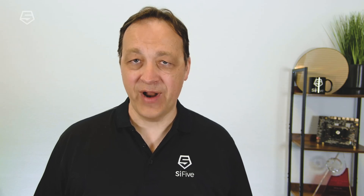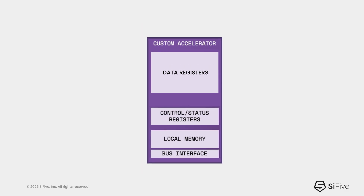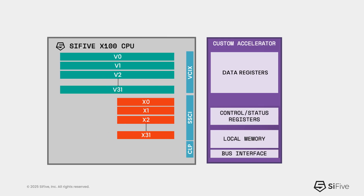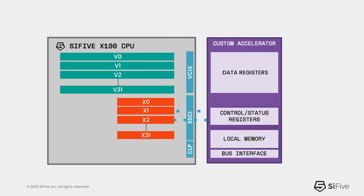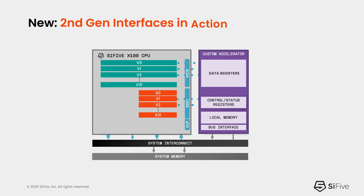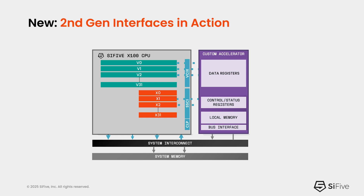Let's see how the second-generation coprocessor interfaces are used in practice. In an example where the customer attaches their own custom logic to the Sci-5 X100 series core, they use the SSCI interface to drive command and control registers in the coprocessor, and the VCIX interface to drive vector data to and from the accelerator. The vector unit on the X100 core can do a comprehensive set of vector loads and stores in and out of memory, send the packed data over to the customer coprocessor, and also perform pre- and post-processing of that data before it gets to the accelerator — all programmable through a standard RISC-V software environment.